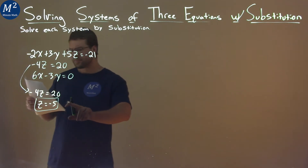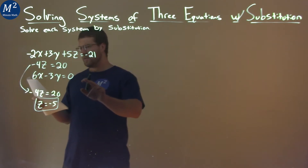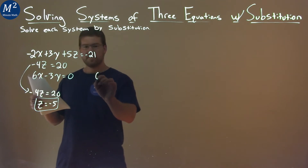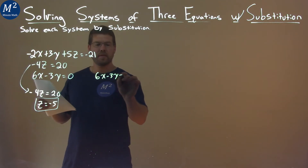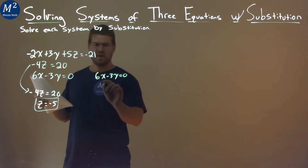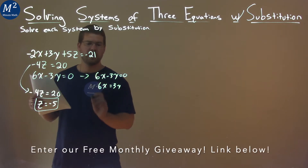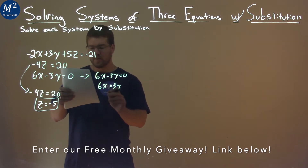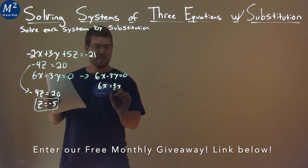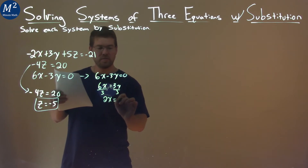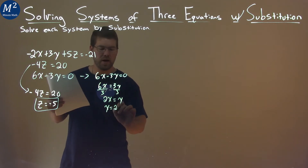We're going to go from here. We also know the third equation: 6x minus 3y equals zero. If I add 3y to both sides, I have 6x equals 3y. Divide both sides by 3, and we have 2x equals 1y, or y equals 2x. That was actually pretty easy to get y by itself as well.